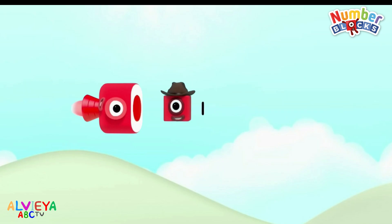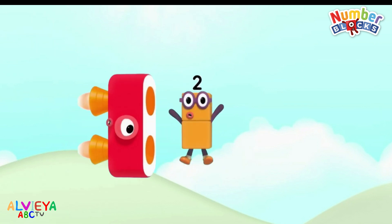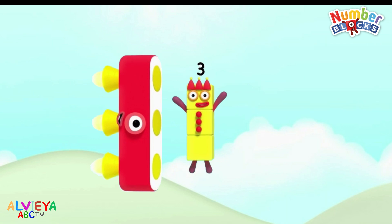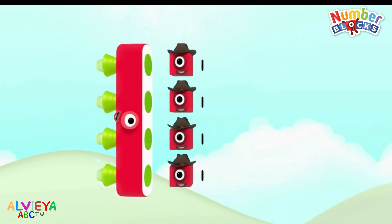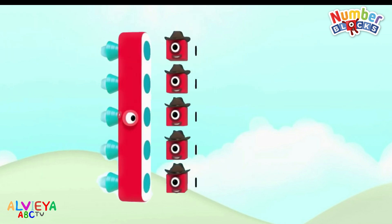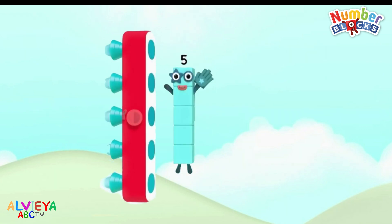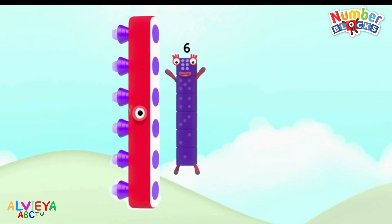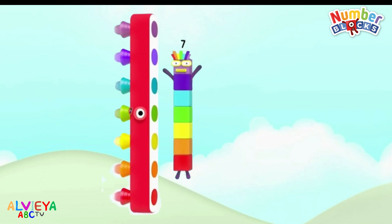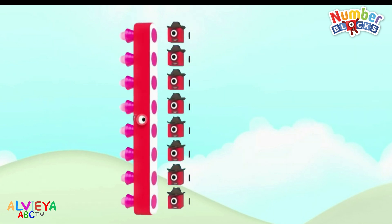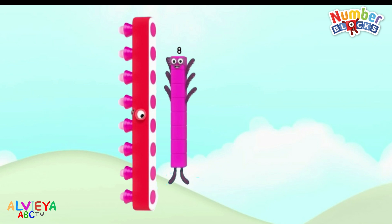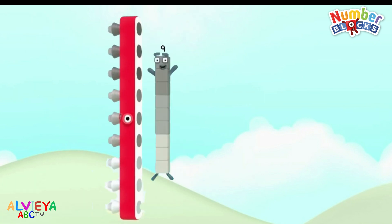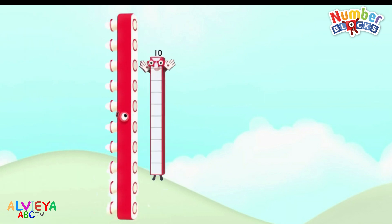One one is one. Two ones are two. Three ones are three. Four ones are four. Five ones are five. Six ones are six. And seven ones are seven. Eight ones are eight. Nine ones are nine. And ten ones are ten.